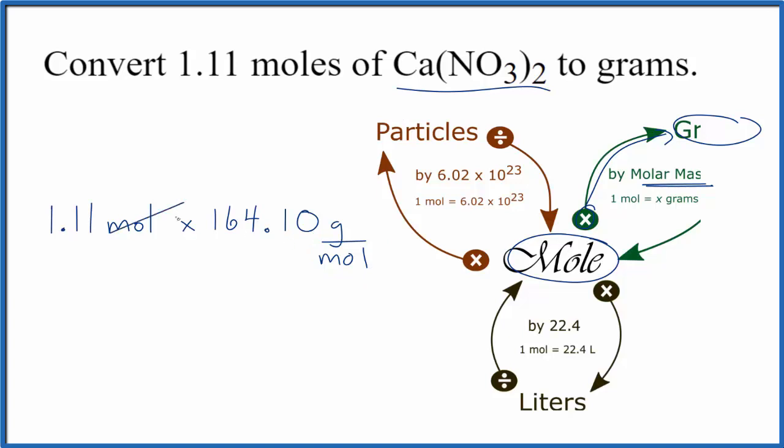When we multiply, moles on top and on the bottom cancel out, leaving us with grams. That's what we're looking for. When the moles cancel out, we're left with grams, so we know we've done it correctly.